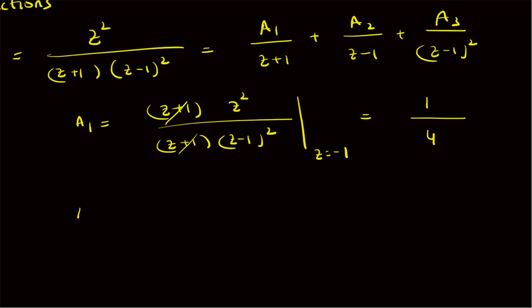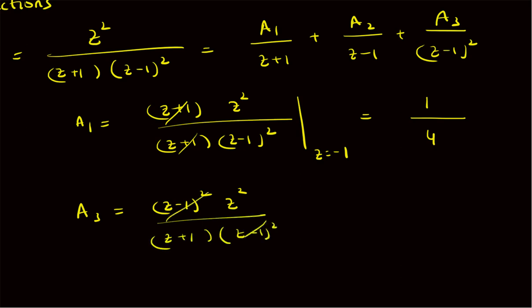Next we compute A₃. A₃ is given by (z-1)² × X(z)/z = (z-1)² × z² / [(z+1)(z-1)²], evaluated at z = 1. This simplifies to 1/(1+1) = 1/2. So A₃ = 1/2.